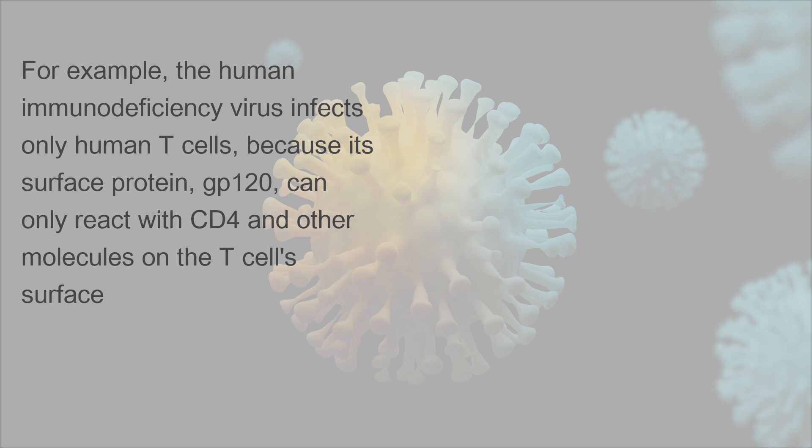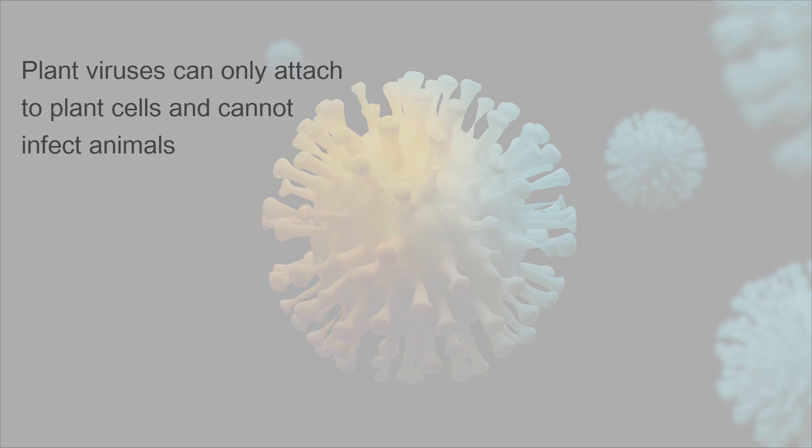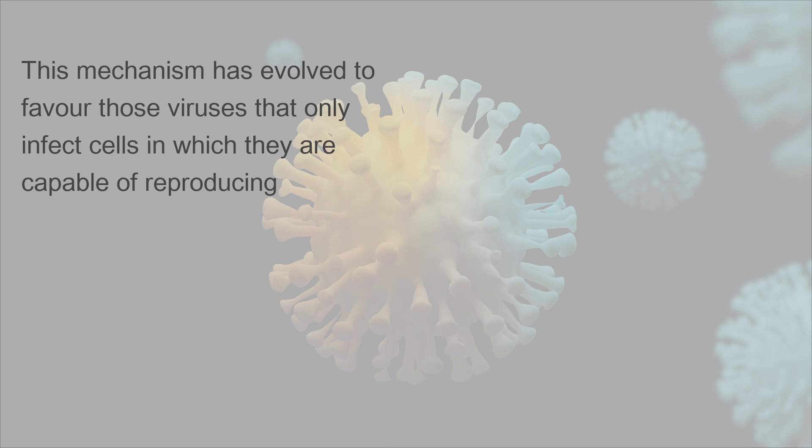For example, the human immunodeficiency virus infects only human T cells because its surface protein, GP120, can only react with CD4 and other molecules on the T cell's surface. Plant viruses can only attach to plant cells and cannot infect animals. This mechanism has evolved to favor those viruses that only infect cells in which they are capable of reproducing.